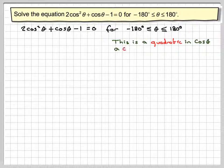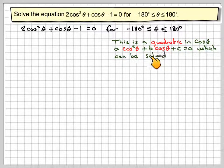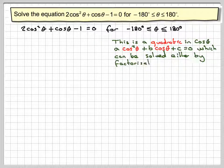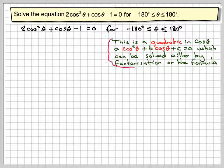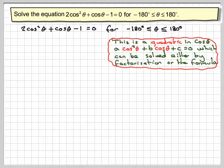This is a quadratic in cos theta. It's of this type: A cos squared theta plus B cos theta plus C equals 0, which can either be factorized or you can use what's known as the quadratic formula. You're normally used to A x squared plus B x plus C equals 0, but it's the same sort of thing.